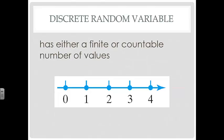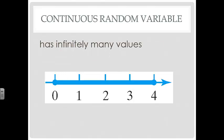A discrete random variable has either a finite or countable number of values, so if you take a look at the number line, your values are going to fall on those whole numbers. A continuous random variable has infinitely many values, so if you look at the number line, you have all the values in between those whole numbers that could be possible values for your variable.